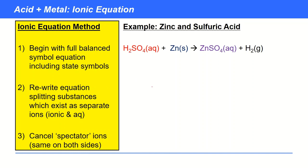If you're confident, pause the video and try to derive the ionic equation yourself; otherwise let's do this as an example. The second stage is to rewrite the equation and split substances which exist as separate ions. An ionic equation tries to represent reality more faithfully — anything ionic and aqueous gets split. We also split acids: sulfuric acid in aqueous solution dissociates into H⁺ and SO₄²⁻ ions.